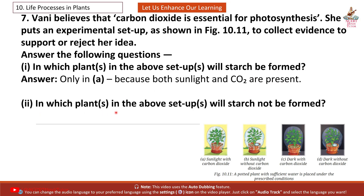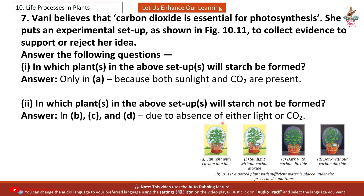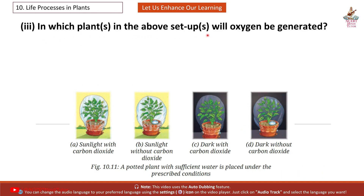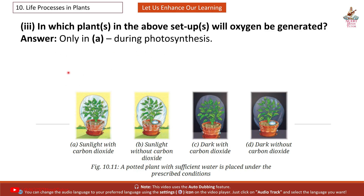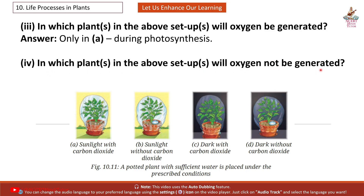Question 2: In which plant will starch not be formed? Answer: In B, C and D due to the absence of either light or CO2. In B there is sunlight but no carbon dioxide. In C there is no sunlight but carbon dioxide is present. In D there is no sunlight and also no carbon dioxide. That is why B, C and D are the answers. Question 3: In which plant will oxygen be generated? Answer: Only in plant A during photosynthesis. Question 4: In which plant will oxygen not be generated? Answer: In B, C and D.